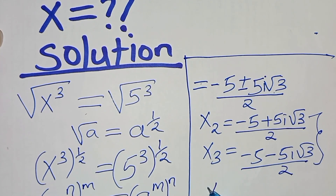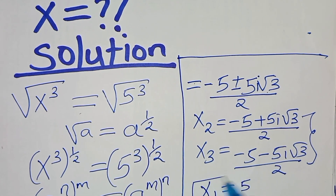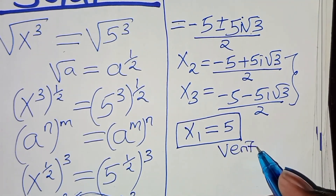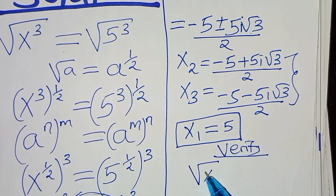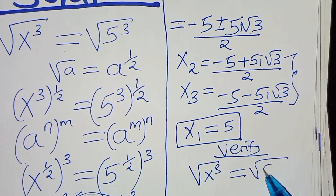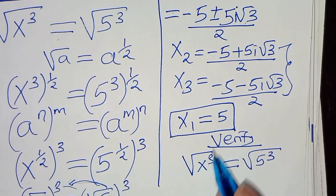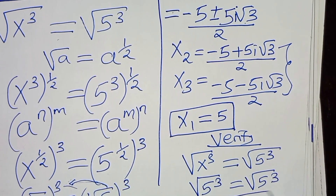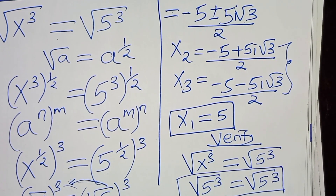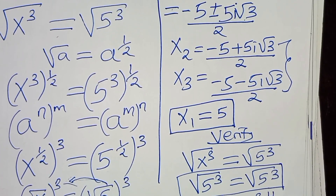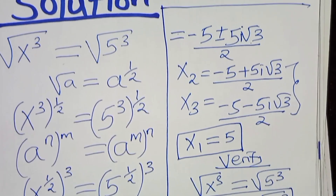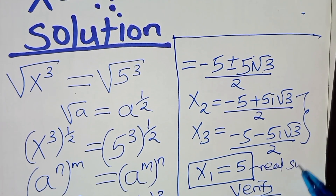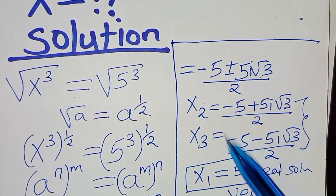We only have one real solution, which is x₁ equal to 5. Let's verify: substituting x = 5, we get the square root of 5 to power 3 on the left, equal to the square root of 5 to power 3 on the right — the left-hand side equals the right-hand side. This confirms our math problem has three solutions: x₁ is the real solution equal to 5, while x₂ and x₃ are complex solutions.